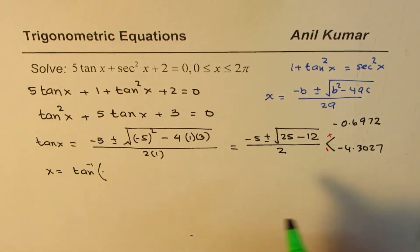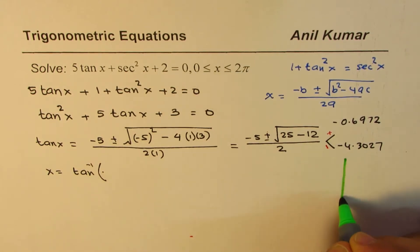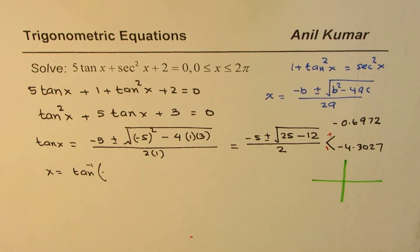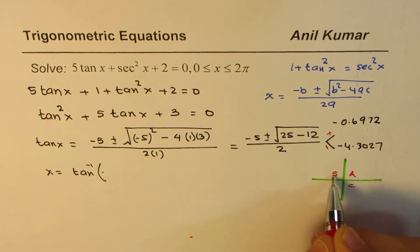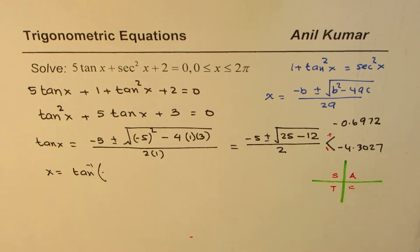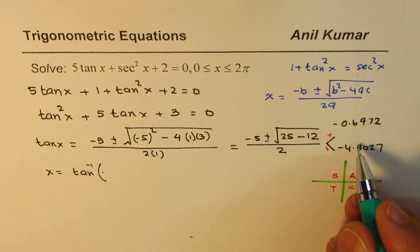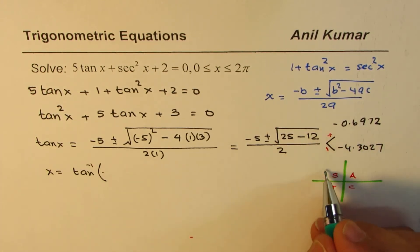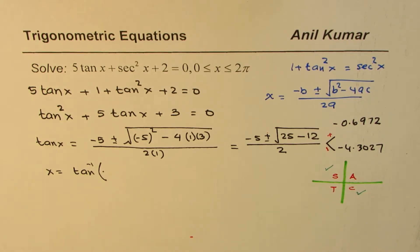The CAST rule says: all positive in quadrant 1, sine in quadrant 2, tan in quadrant 3, cosine in quadrant 4. For a negative tan value, tan is negative in quadrant 2 and quadrant 4 — so we expect two solutions for each of the two tan values.